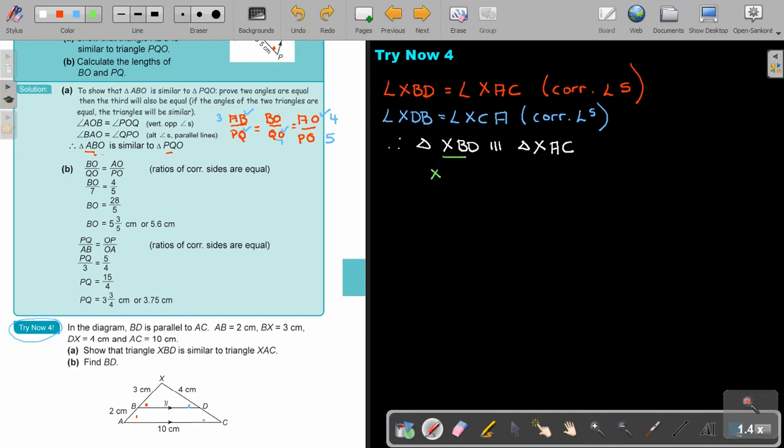It's XB over XA equals BD over AC equals XD over XC. Now I'm just going to check what do I have. Just remember that this one will be 3 plus 2, and that will be 5. I have XB, yes, that's 3. XA, that's the 5. Then find BD. So that was just the proof. This was A. Now I'm going to go to B.